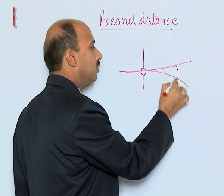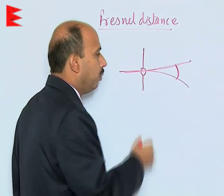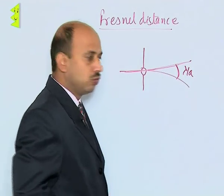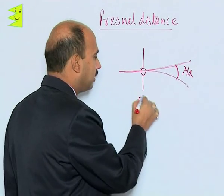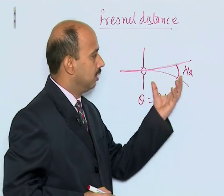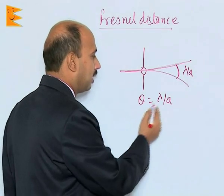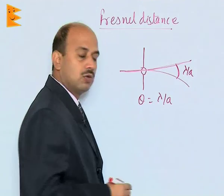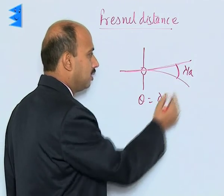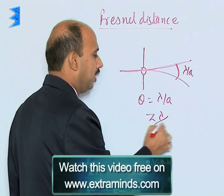This is the width of the central maximum. We can write theta is equal to lambda by a — this is the angular width of the central maximum. In this case, theta is equal to lambda by a. For the distance z, we can write this spreading is z times lambda by a.